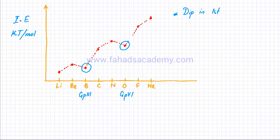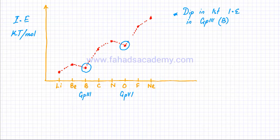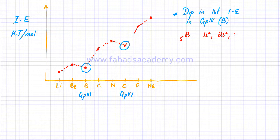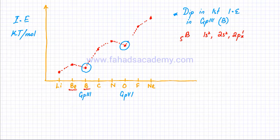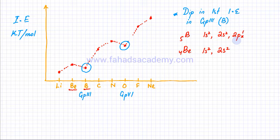The dip at group three, or at boron, has to do with orbital arrangement. If I write the orbital arrangement for boron — which has five electrons — it's 1s², 2s², 2px¹. Comparing that with beryllium, which has four electrons: 1s², 2s². When we talk about the first ionization energy of boron, we're removing the electron from the 2px orbital, whereas for beryllium we're removing the electron from the 2s² orbital.